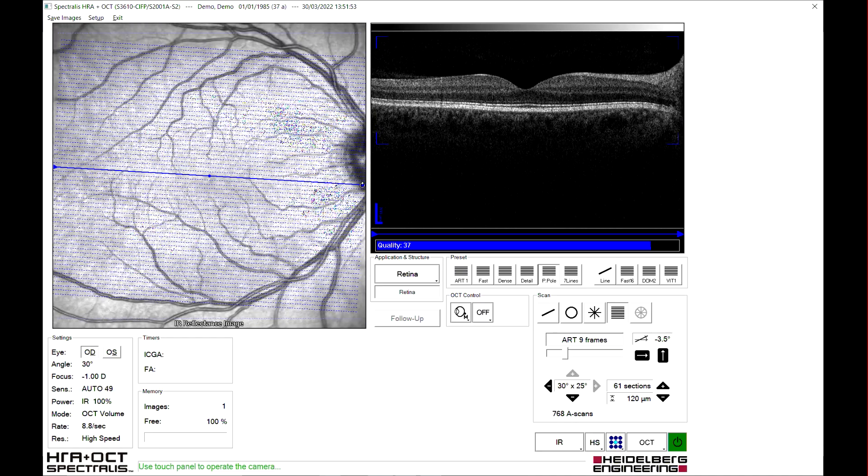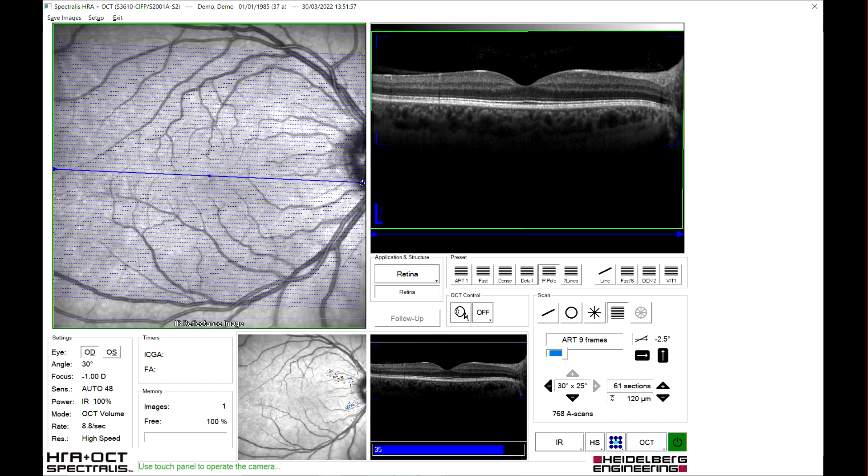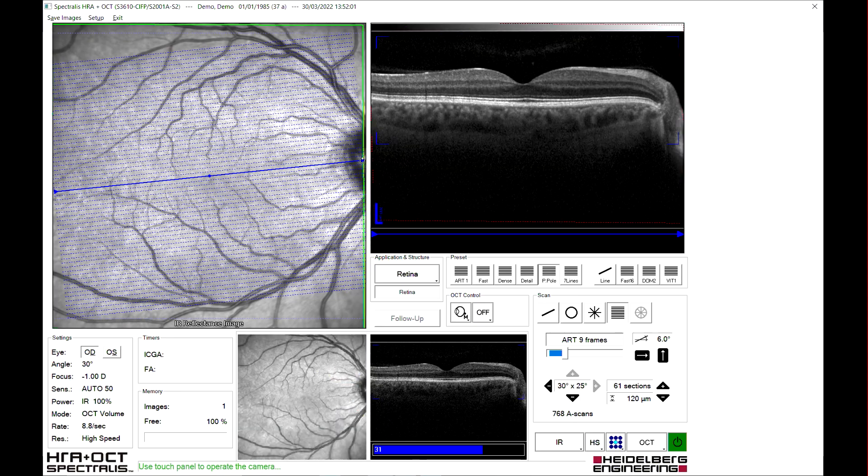Considerations for posterior pole. When retinal tracking has been engaged, the scan line should be adjusted to cut directly through the centre of the fovea, with the nasal end of the scan line positioned at the centre of the disc.